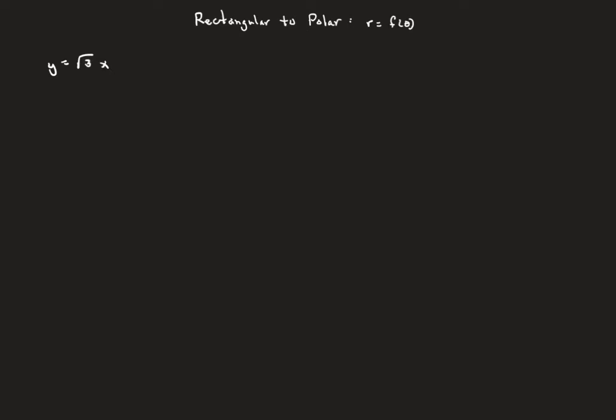We're going to talk about how to convert rectangular equations to polar equations. Our goal when going to polar is to try to get something like r equals and then what follows is all thetas. But it's not a hundred percent of the time — sometimes we get r squared equals something with thetas, and still other times the r's disappear altogether and we get something like theta equals whatever. This doesn't always go the same, so you have to get some practice and experience — there's no shortcut around that.